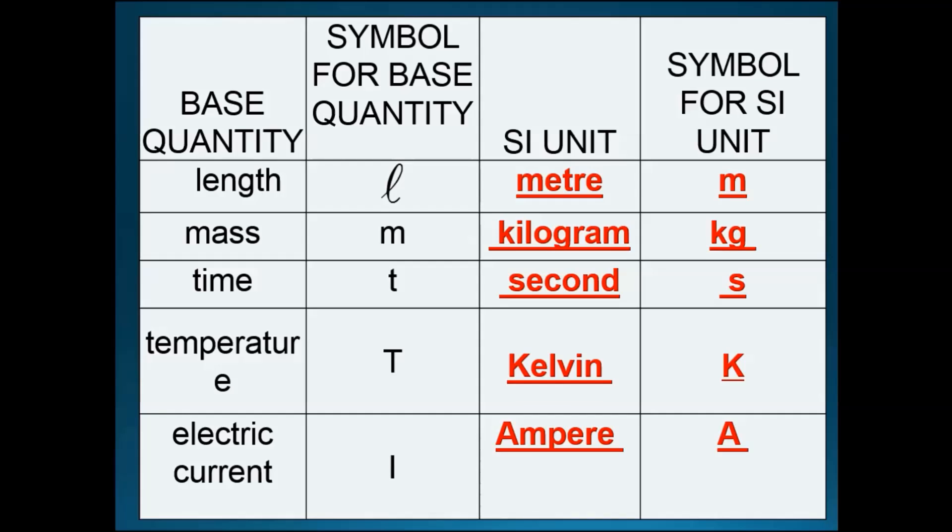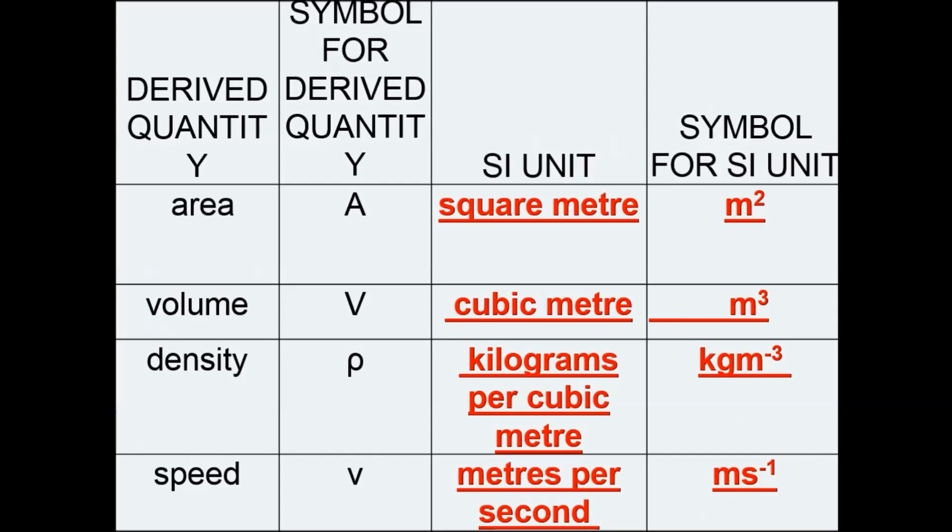The SI unit for temperature is actually Kelvin. Most people think the SI unit for temperature is degrees Celsius, but that's not true. The symbol is K. The SI unit for electric current is the ampere, with symbol A. Next, we need to look at derived quantities, which are not base quantities.